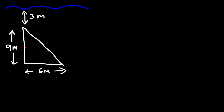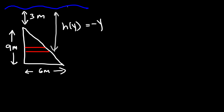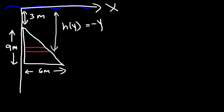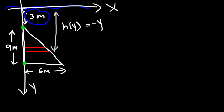The first thing we need to do is determine h(y), which is simply negative y. We call the water level the x-axis and this is the y-axis. Point c is 12 meters deep — 3 plus 9 is 12 — so c is at negative 12, and d is at negative 3 along the y-axis. Since the units are in meters, the weight density is 9800 newtons per cubic meter.